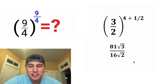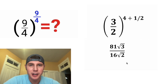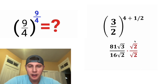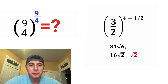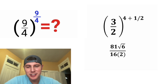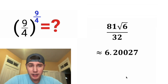But we're still not done. It's not fully simplified until we get rid of the square root in the denominator, so we can multiply top and bottom by square root of 2. On top, square root of 3 times square root of 2 is square root of 6. And on bottom, square root of 2 times square root of 2 is square root of 4. Square root of 4 is equal to 2, and 16 times 2 is 32. And now I think we're done.